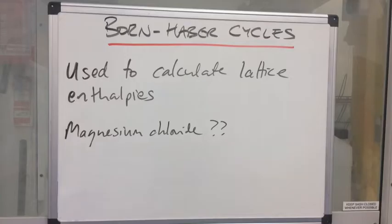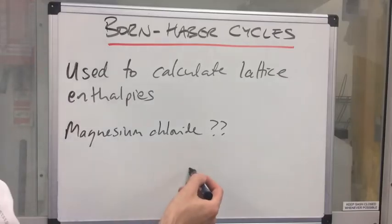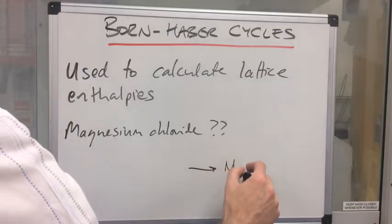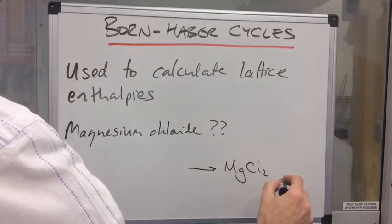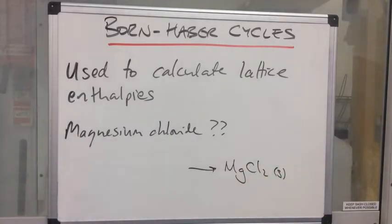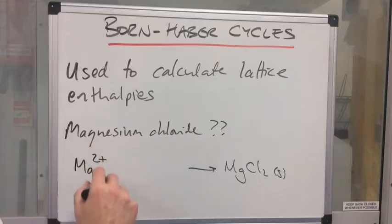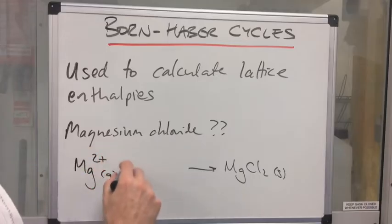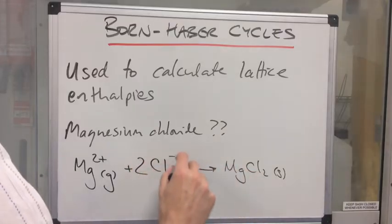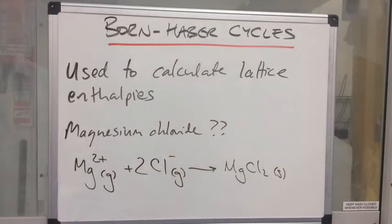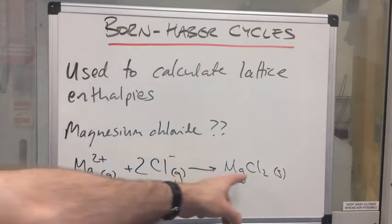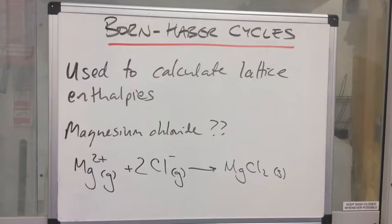Let's have a go at another one. What would the equation look like for the lattice enthalpy for magnesium chloride? Remember, we want to form one mole of an ionic lattice — that's MgCl₂, and it's obviously a solid. All ionic compounds are solid at room temperature. It's made from the magnesium 2+ ion, and we're going to need two chloride ions, and of course both are gaseous. So the enthalpy change that accompanies that reaction is the lattice enthalpy for magnesium chloride.